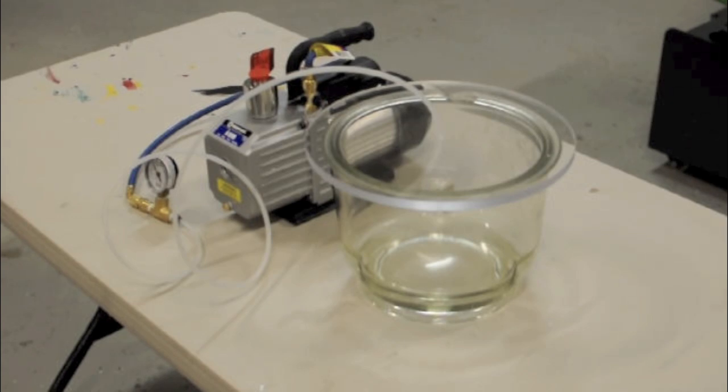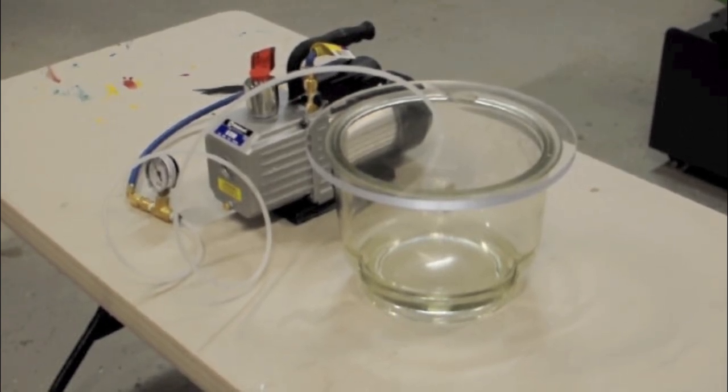Another method is to use a commercial degassing system. This is a system that we made using a bell jar, a rotary vane pump, and some vacuum tubing.